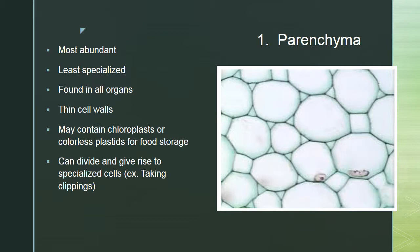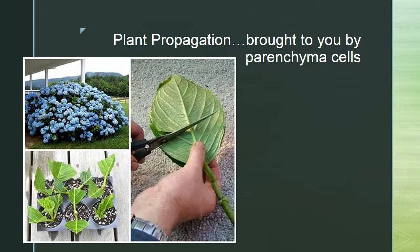Parenchyma cells can divide and give rise to specialized cells. For example, in plant propagation — when you clip a hydrangea stem at a specific point and plant it in soil — parenchyma cells respond to hormones and start growing root cells. Plant propagation is made possible by parenchyma cells.